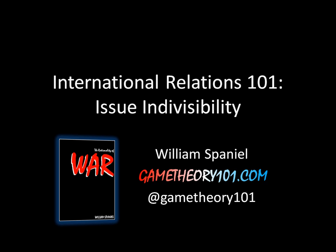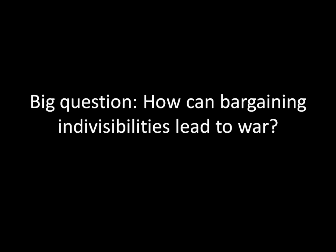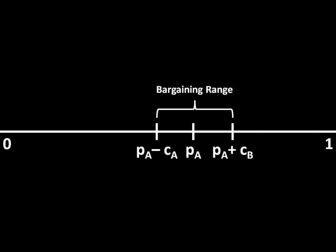The big question we're interested in addressing today is: how can bargaining indivisibilities lead to war? Remember that in our standard bargaining model, as long as the probability of victory is known by both sides and the costs of war are positive, then there exists a bargaining range, and any settlement that falls within that bargaining range is going to be mutually preferable to war.